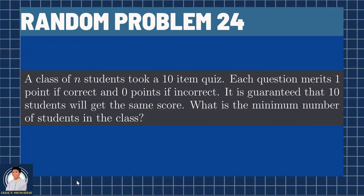Here is Random Problem 24. A class of N students took a 10 item quiz. Each question merits 1 point if correct and 0 points if incorrect. It is guaranteed that 10 students will get the same score. The question is, what is the minimum number of students in the class?